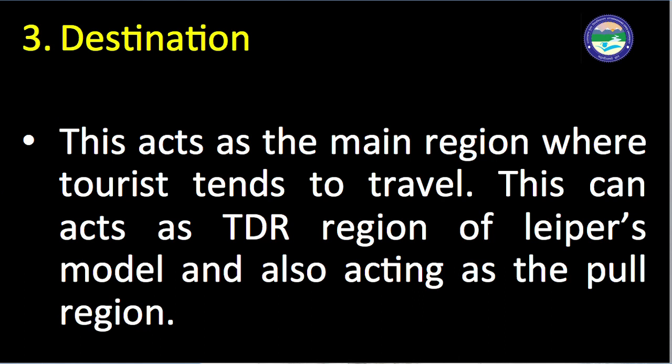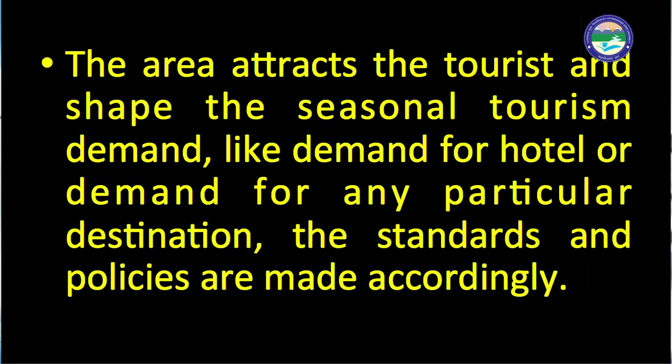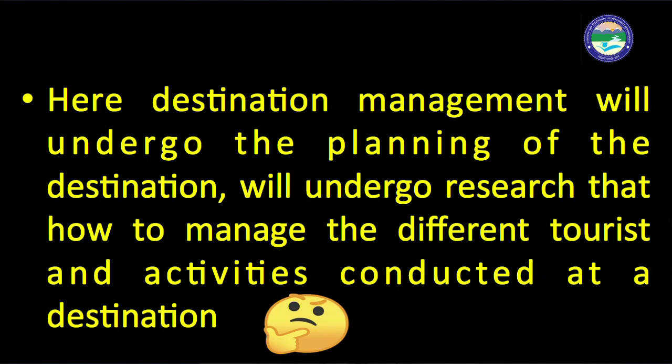The third component is the destination component. This acts as the main region where tourists tend to travel, and can be accessed as the TDR region of Leeper's model. The area attracts tourists and shapes the seasonal tourism demand — such as demand for hotels or for a particular destination. Standards and policies are made accordingly, and destination management undergoes planning and research on how to manage different tourists and activities conducted at the destination.